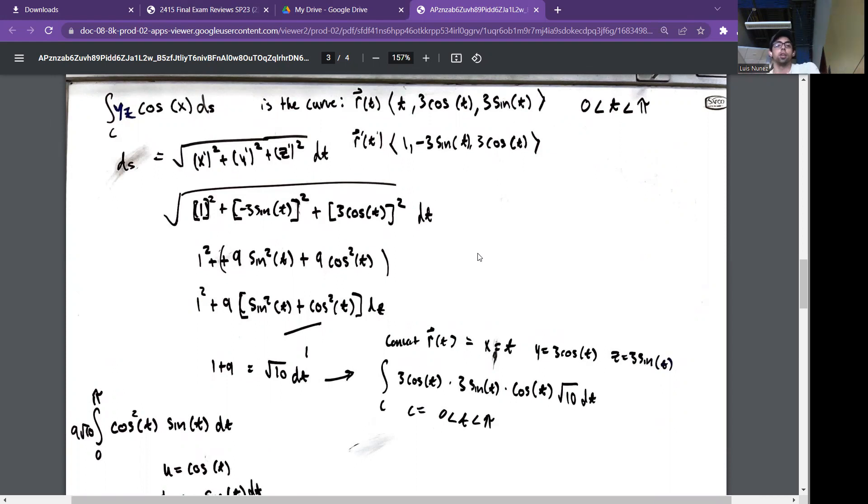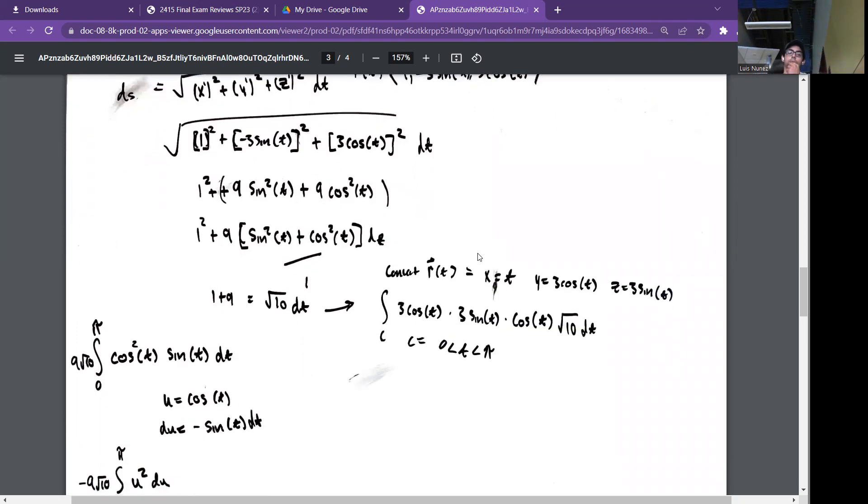I isolated and ended up factoring out the constants, then cleaned it up with 1 plus 9 because of the trig identities, giving square root of 10. Then I inputted the vector components into the variables and combined them all and integrated them.